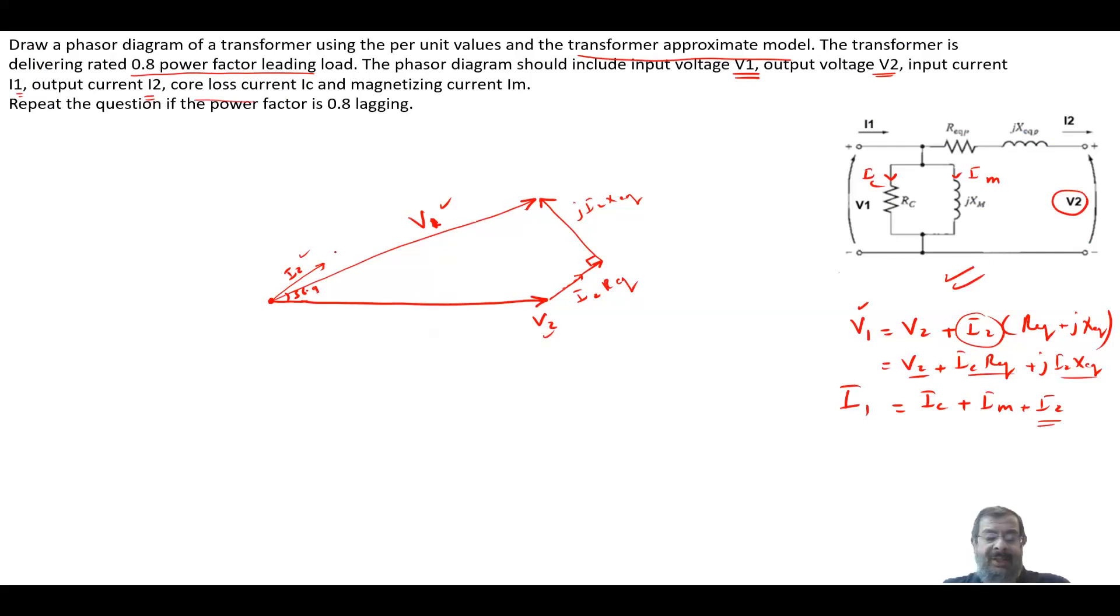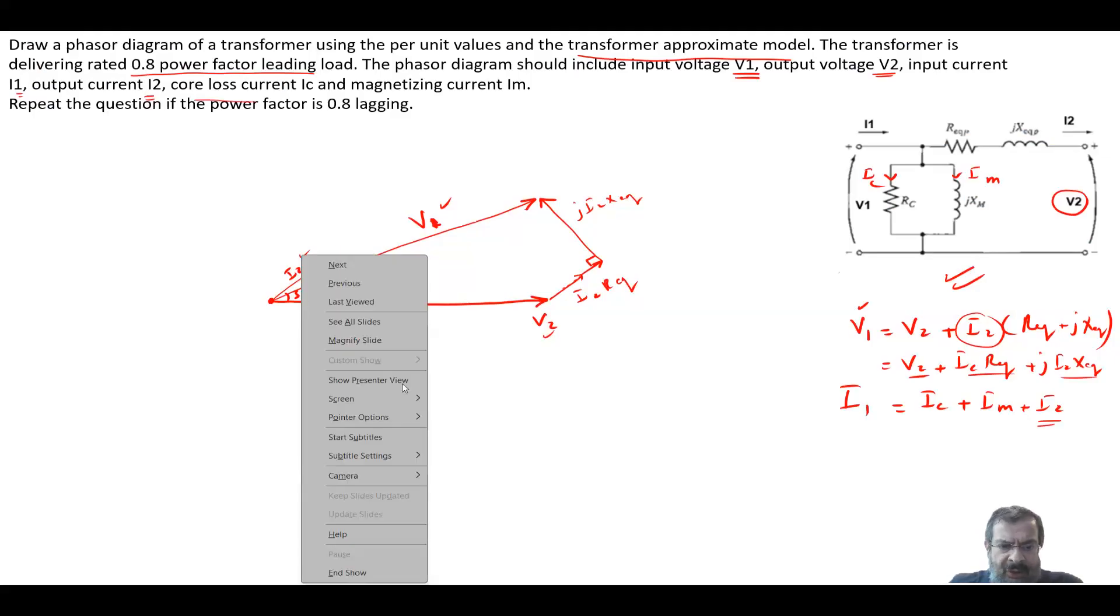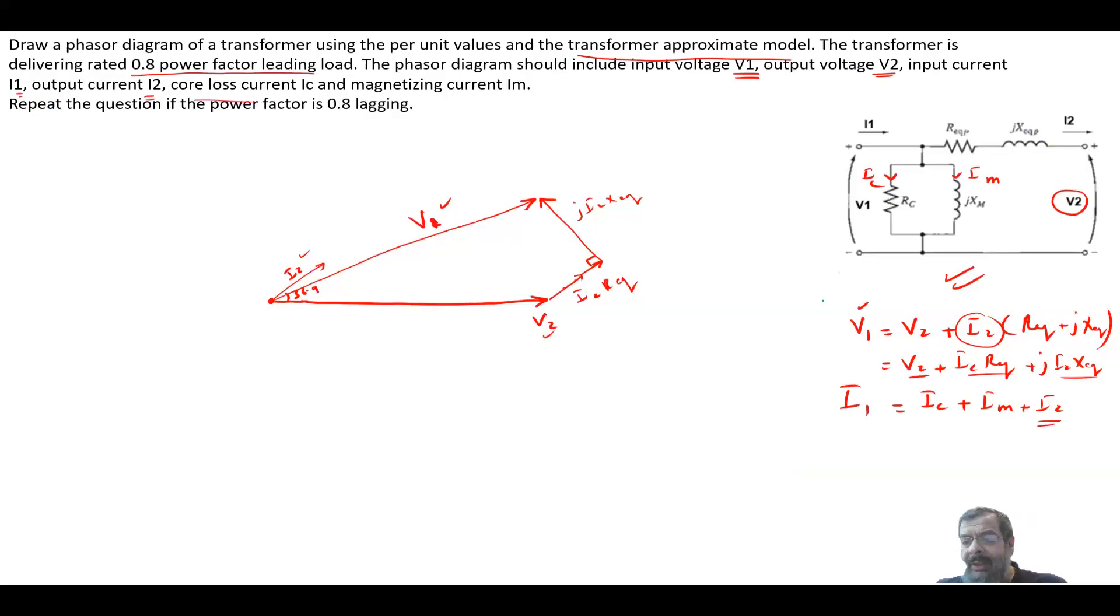Now we need to find IC and IM. Let me change the pointer color. IC is in phase with V1 because IC is V1 divided by RC, and RC is a scalar. So IC will be here in phase with V1.